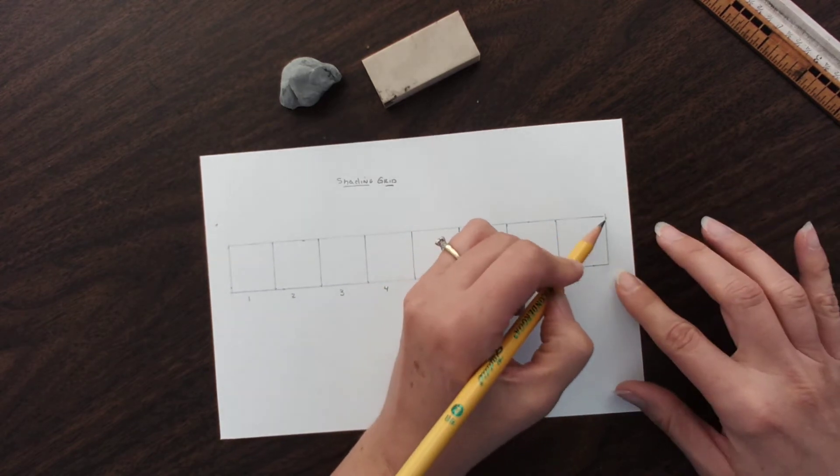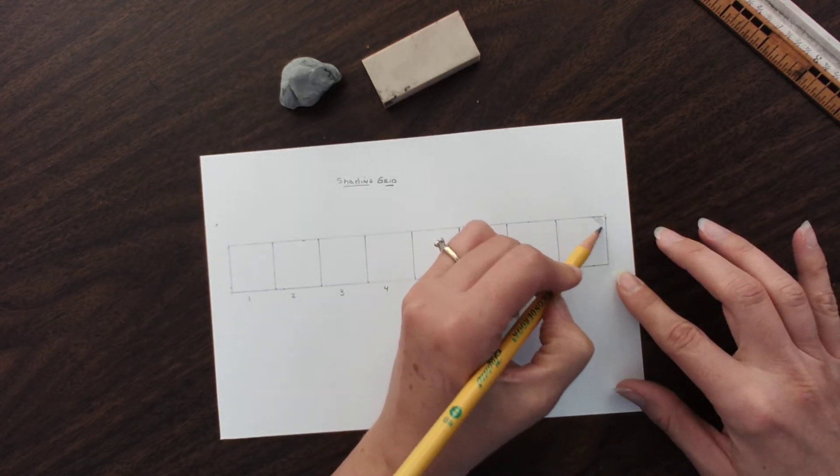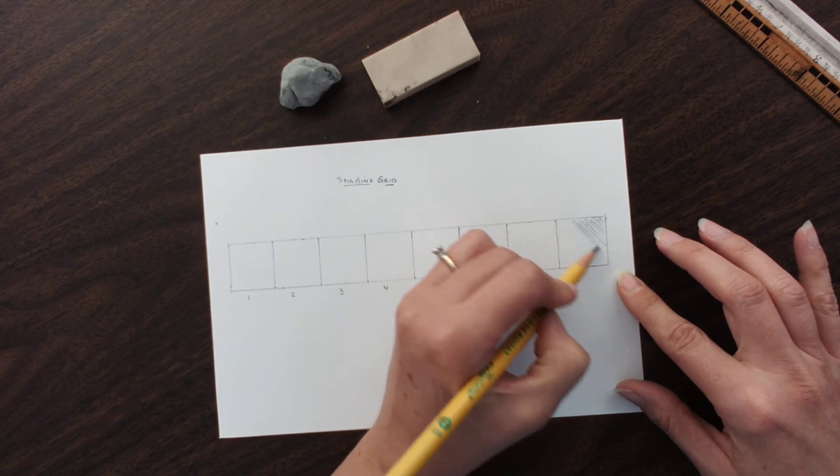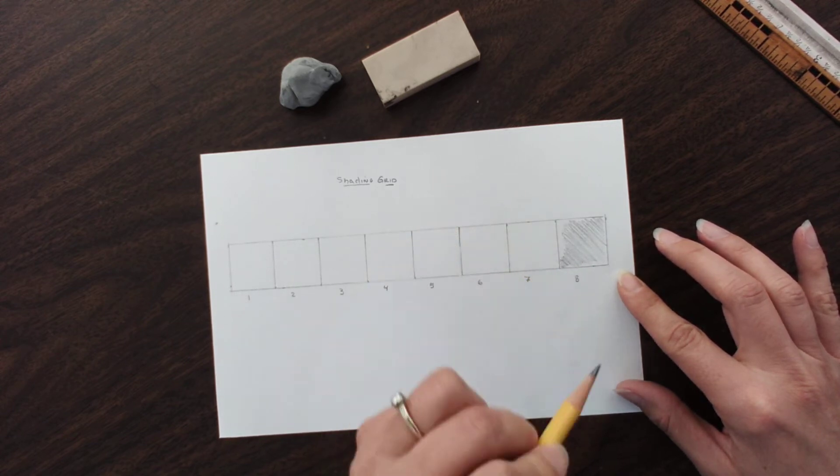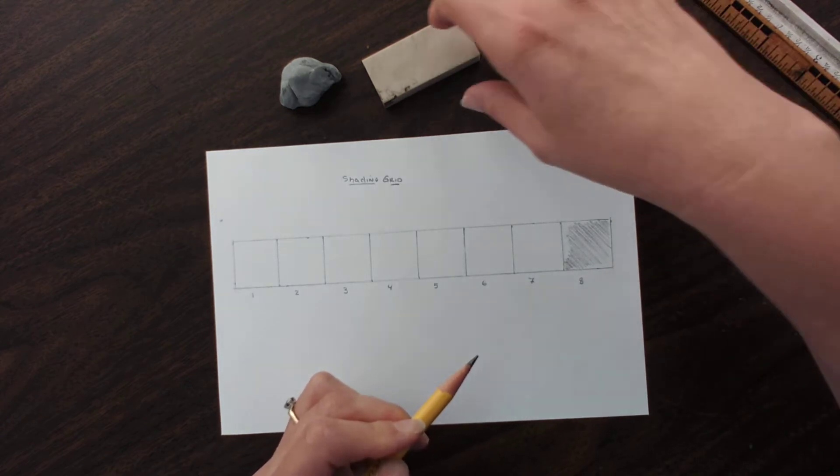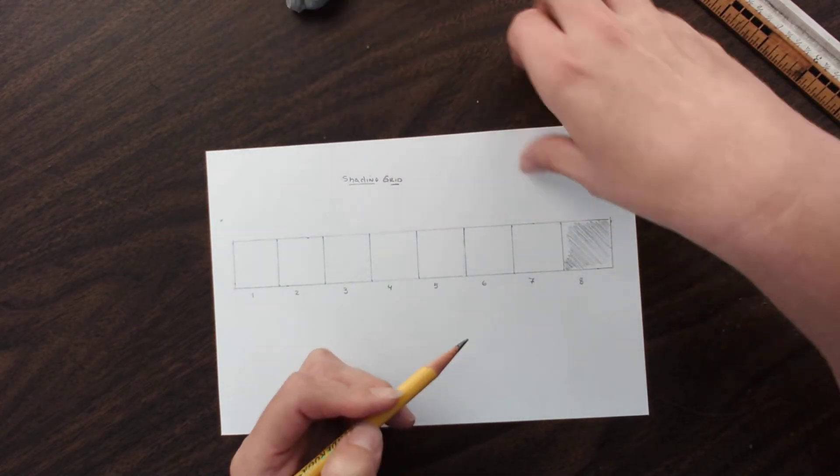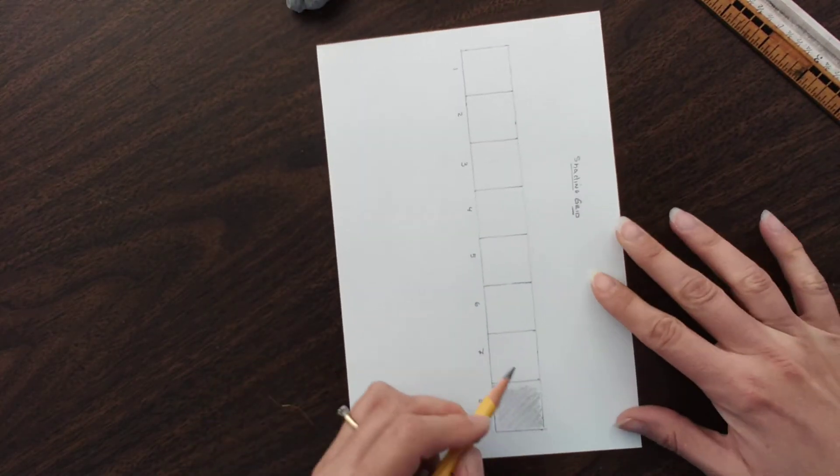I'm going to take my pencil, start from a corner, and start doing a nice line across number eight, which is going to end up being the darkest. As you can see, I didn't get everywhere. That's fine, we've got several layers to go.